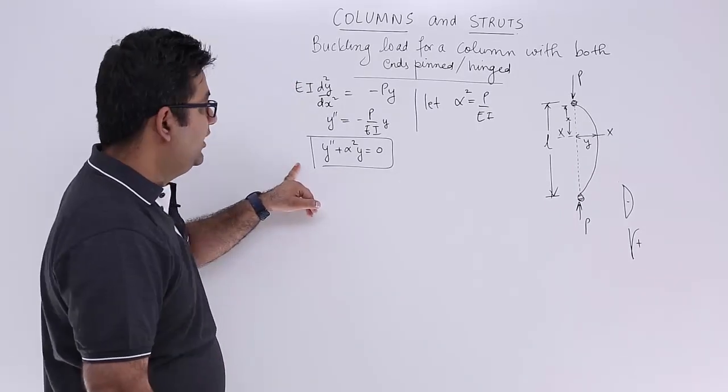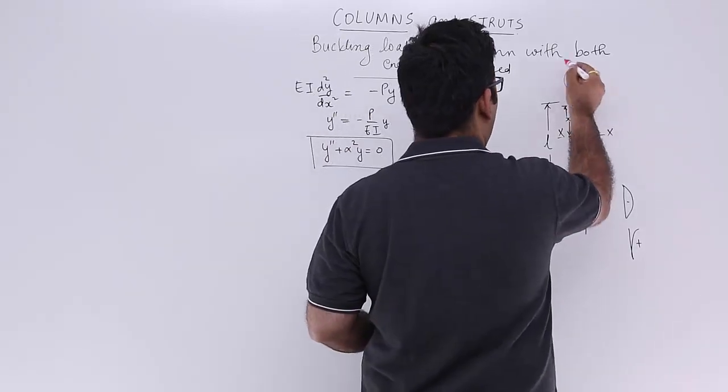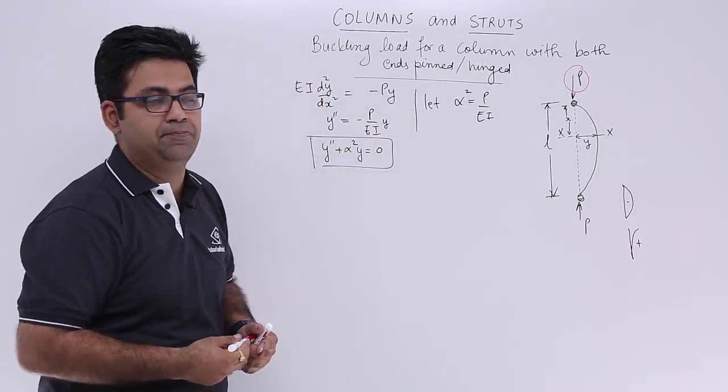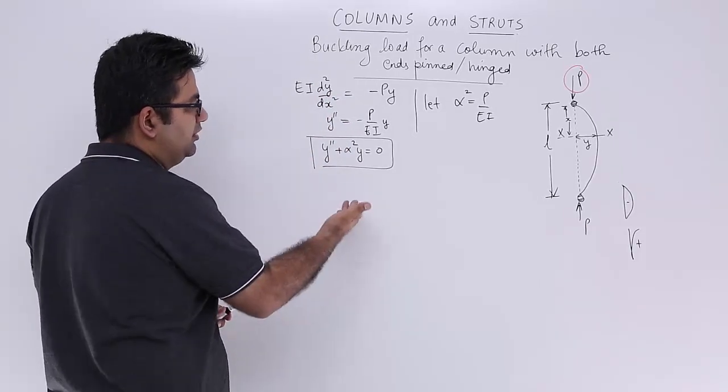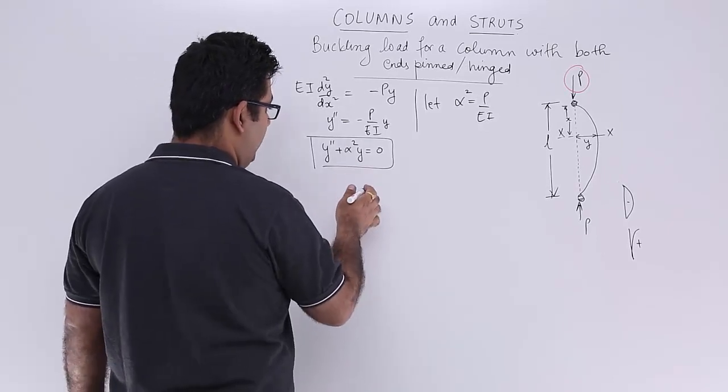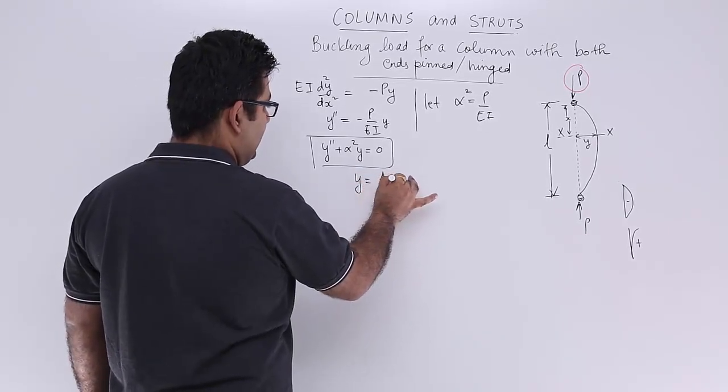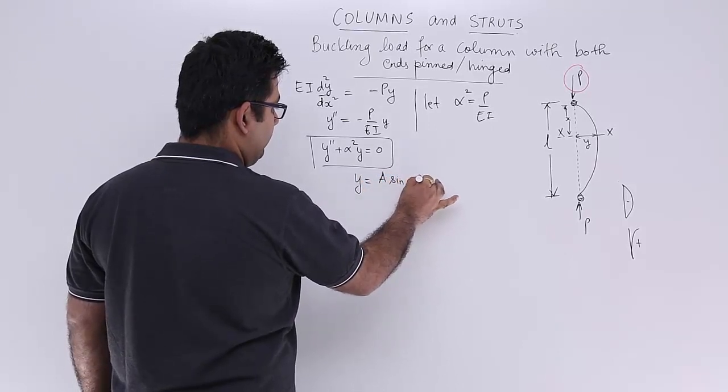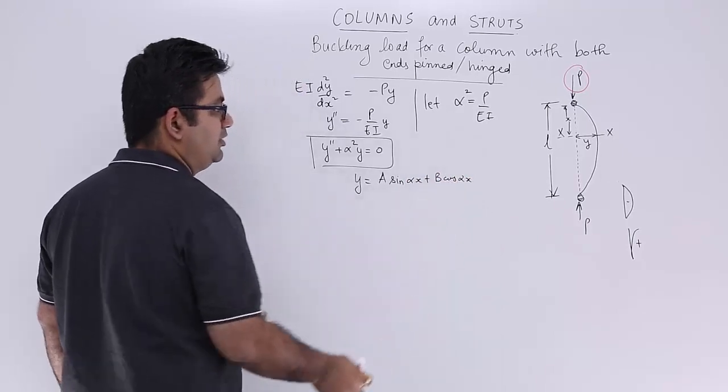Because this is what we need to find out, and from there we will be able to find out at what load you will have buckling. So let's solve this. This is a pretty straightforward differential equation solution. So it will be y is equal to A sin alpha x plus B cos alpha x.